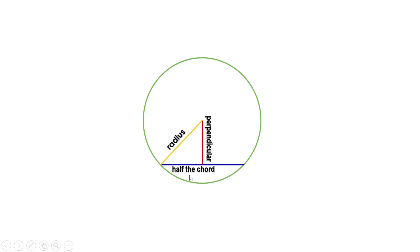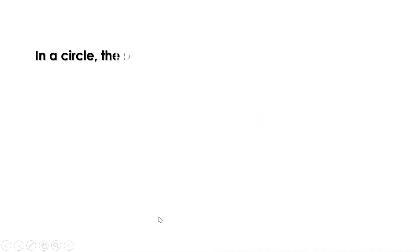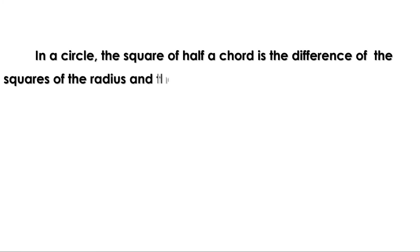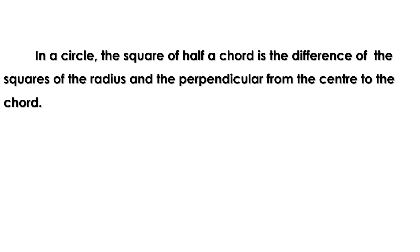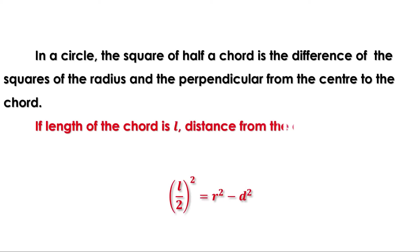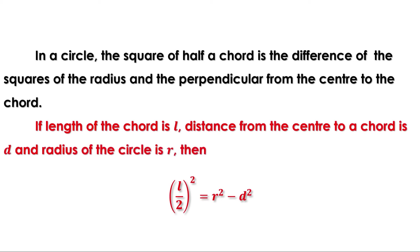The third side is half the chord. In a right angle triangle, hypotenuse squared equals base squared plus altitude squared, so base squared equals hypotenuse squared minus altitude squared. Therefore, the square of half the chord equals the square of the radius minus the square of the perpendicular distance from the center to the chord. If the length of the chord is l, the distance from the center to the chord is d, and the radius is r, then (l/2)² = r² − d².